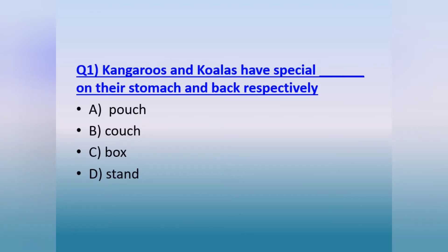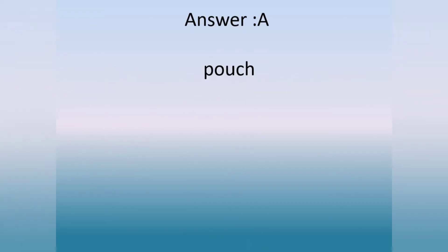Question number 1. Kangaroos and koalas have special dash on their stomach and back respectively. A. Pouch. B. Couch. C. Box. D. Stand. The answer is option A, pouch.